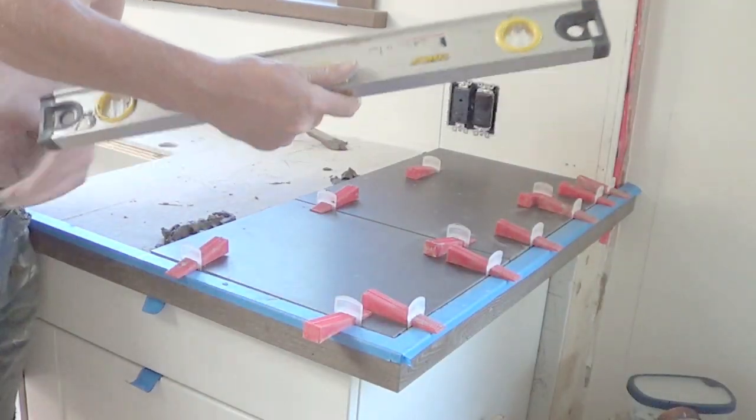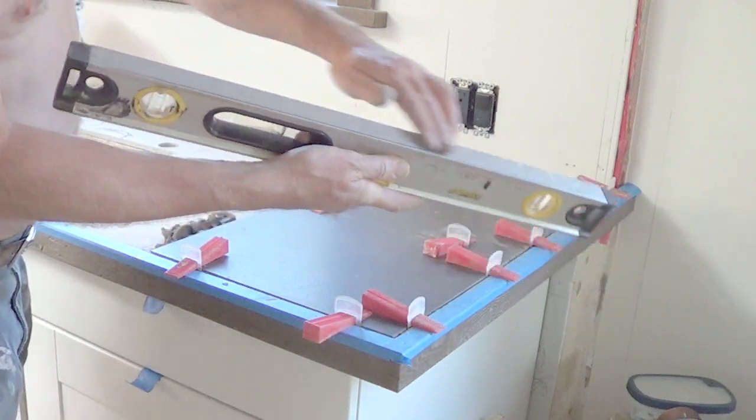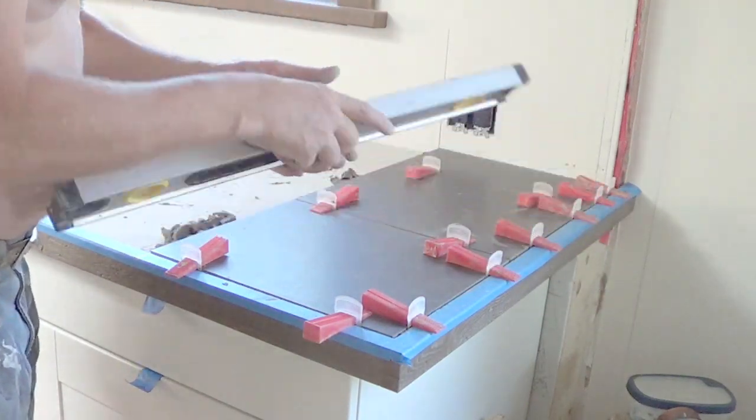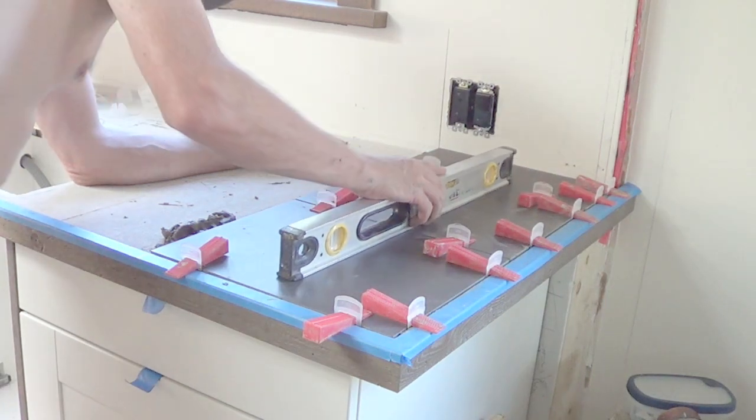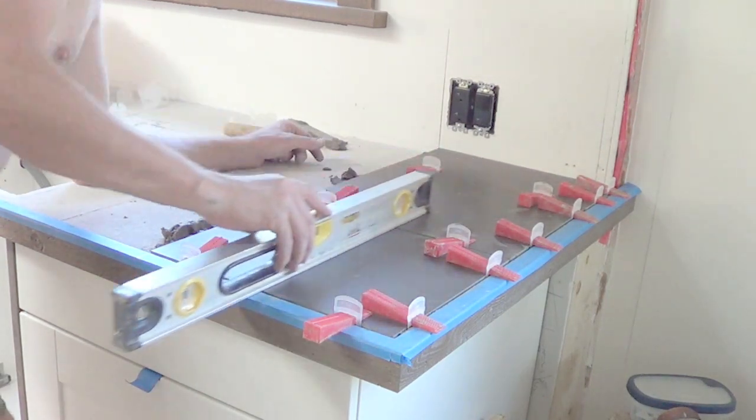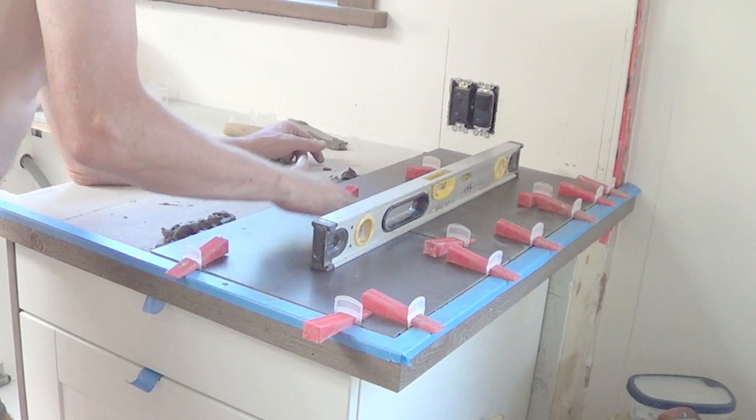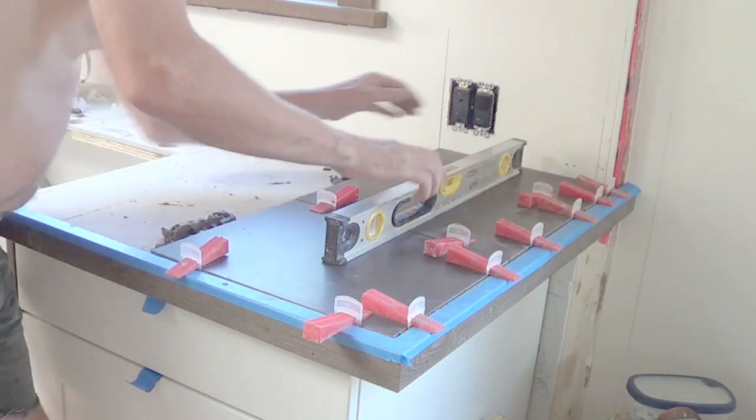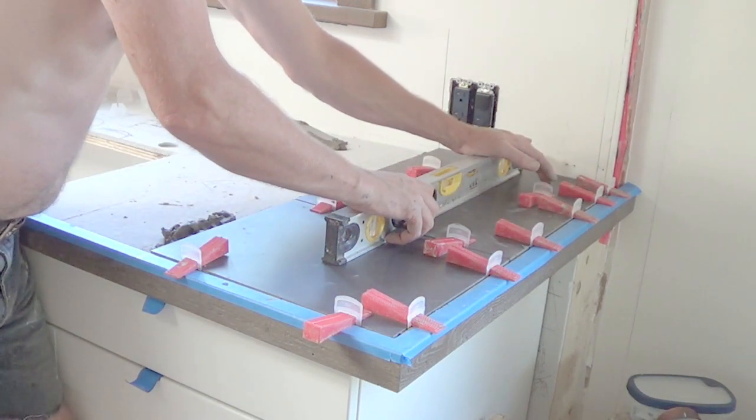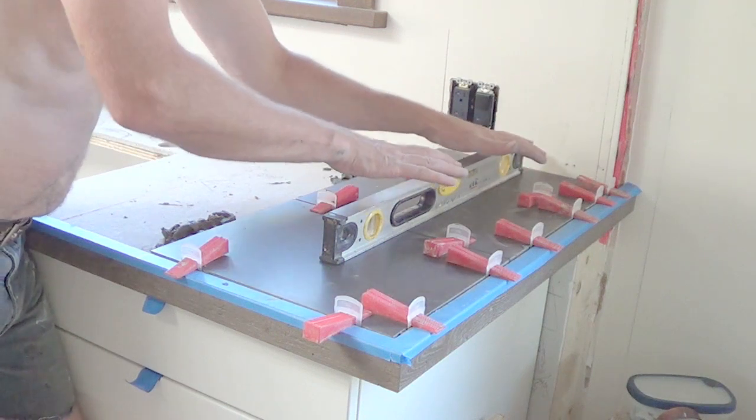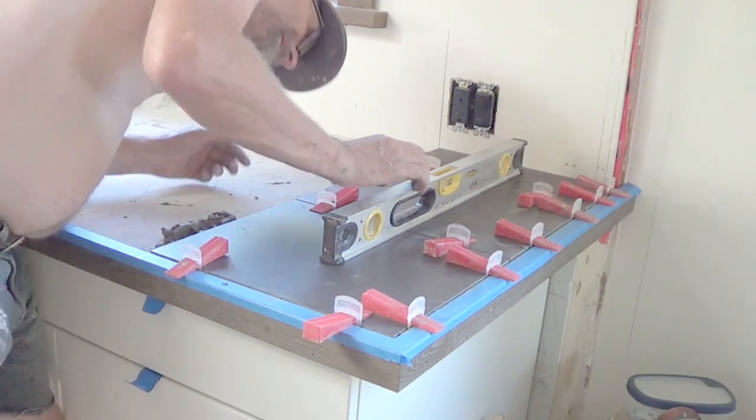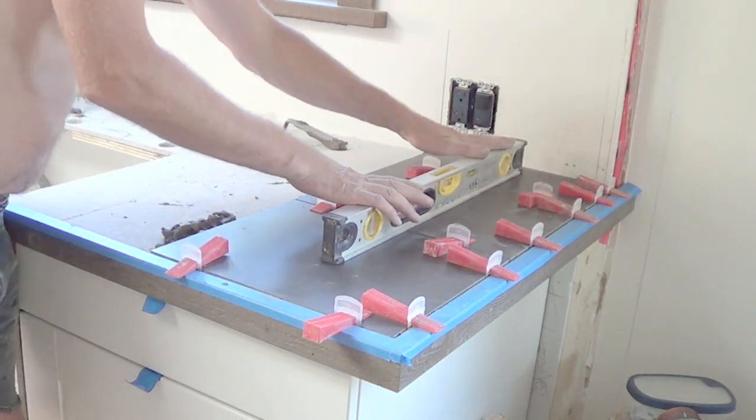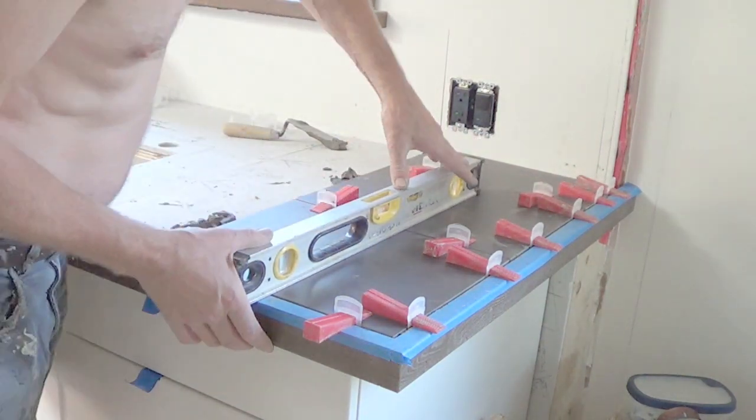Now once you've got them set, take a straight edge and make sure there's no mortar or glue or something like that on it. You should be able to run it right across without hitting anything. You can push down on all of them at the same time a little bit. I just give it a little tiny wiggle there just to set those tiles. And it looks like we're dead on level. So that's what we really like to see in here.